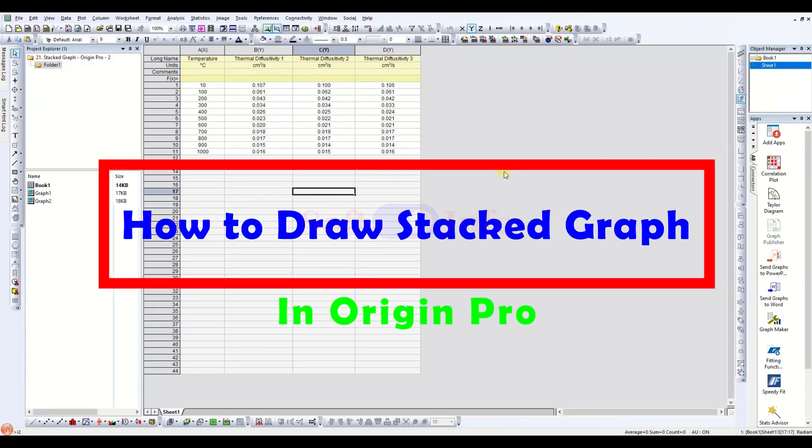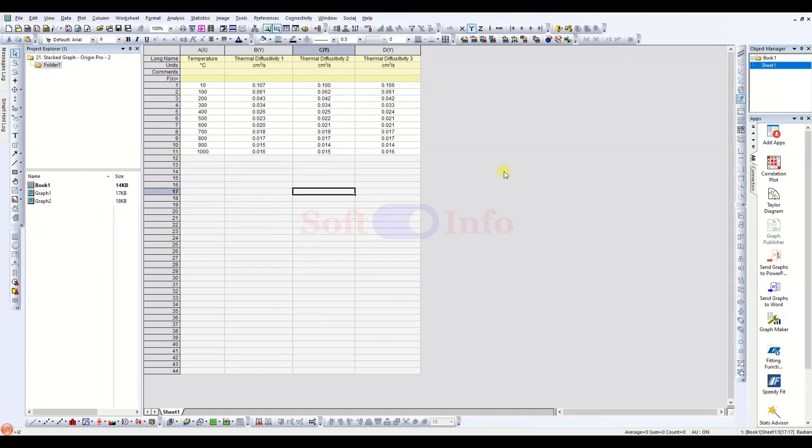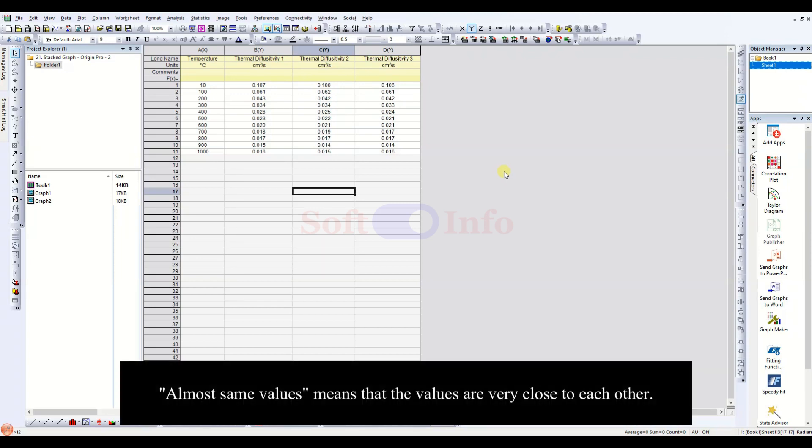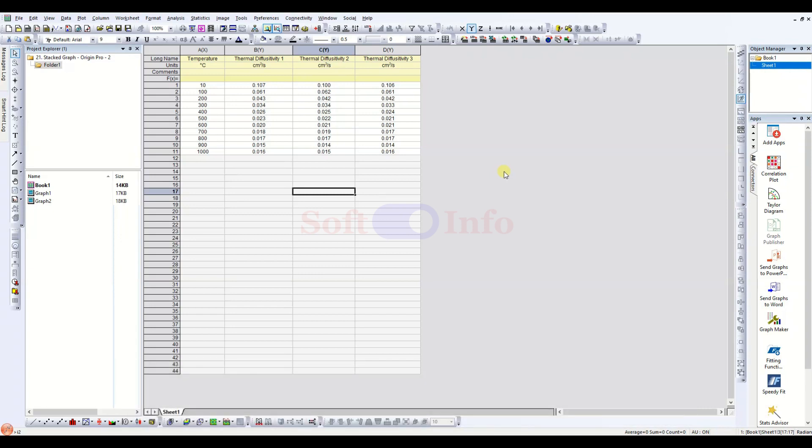In this tutorial, you will discover how to create a stacked plot using Origin Pro. Stacked graphs are useful when you are dealing with datasets where two or more variables have almost the same values. Firstly, we will explain when the stacked plot is needed.